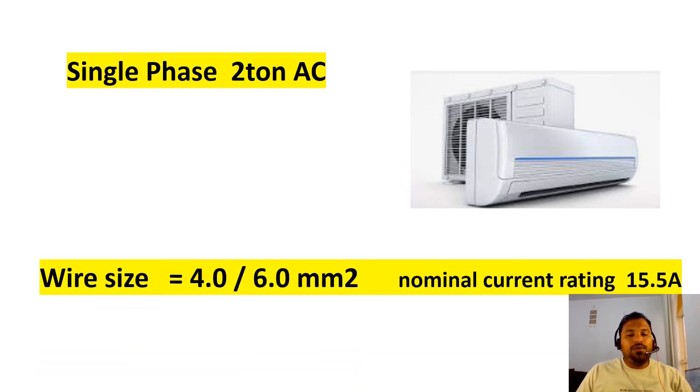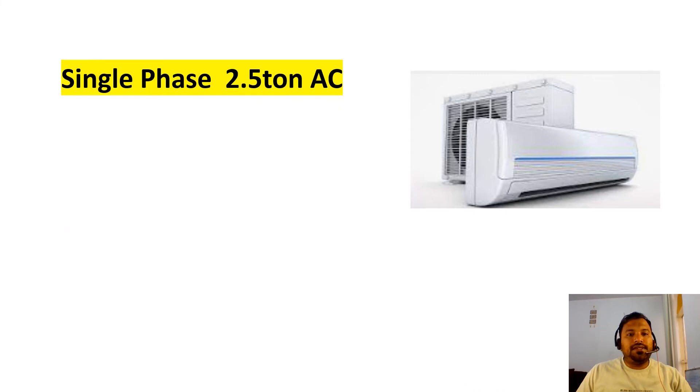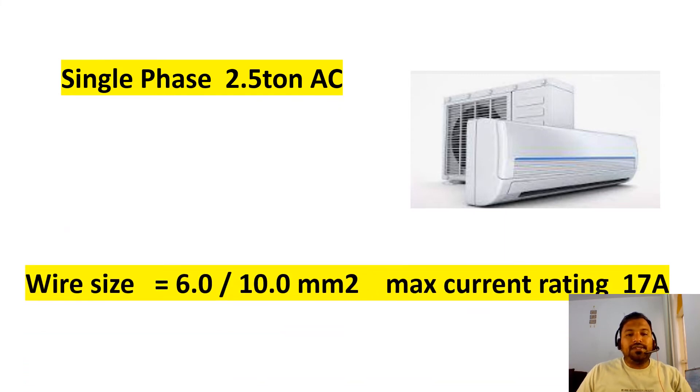For 2.5 ton AC, wire size will be 6 or 10 mm square. So my recommendation, you go with 10 mm square. Why I mention higher wire sizes? Because this 10 mm square is the full rated capacity. This is never operated at full rated, so that is the reason you can go with 6 mm square also.